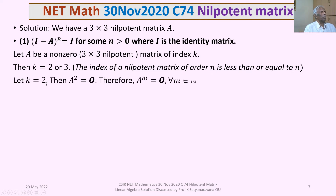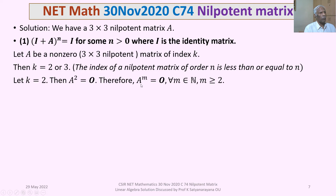Let k = 2, meaning A is a 3×3 nilpotent matrix of index 2. Then A² = 0, and multiplying both sides by A gives A³ = 0, A⁴ = 0, and so on. Therefore A^m = 0 for all positive integers m ≥ 2.